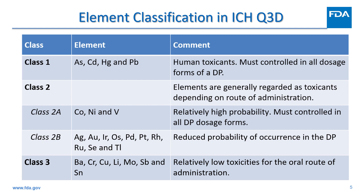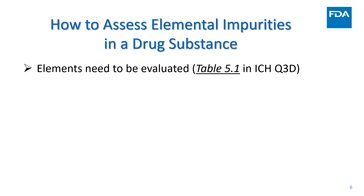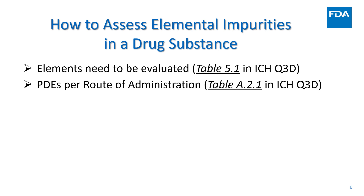The seven elements in Class 3 have relatively low toxicities by the oral route, but may require consideration in the risk assessment for inhalation and parenteral routes of administration. ICH Q3D provides methods to assess elemental impurities in a drug product, and the following methods can also be used in the risk assessment of a drug substance. Table 5.1 includes 24 elements which should be considered in the risk assessment. Table 8.2.1 lists the PDEs for each element under oral, parenteral, and inhalation routes of administration.